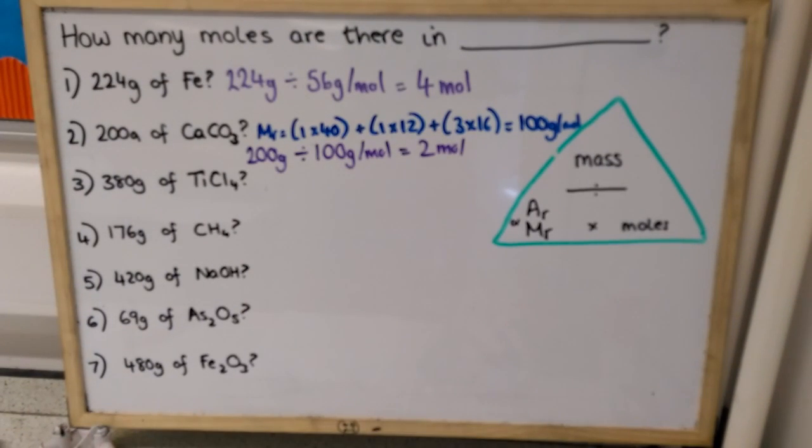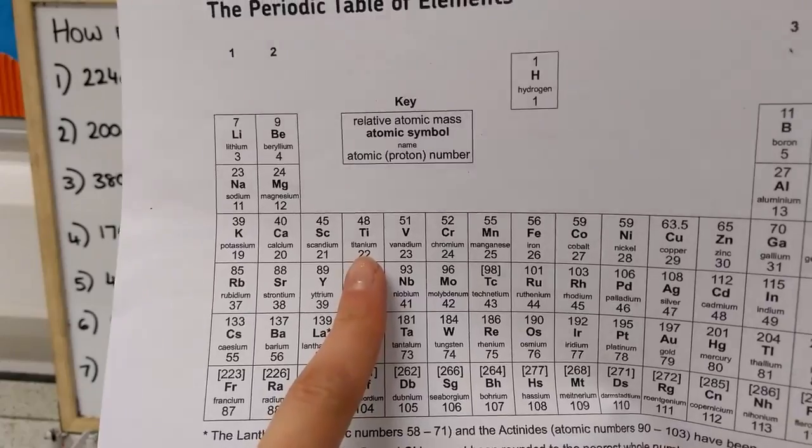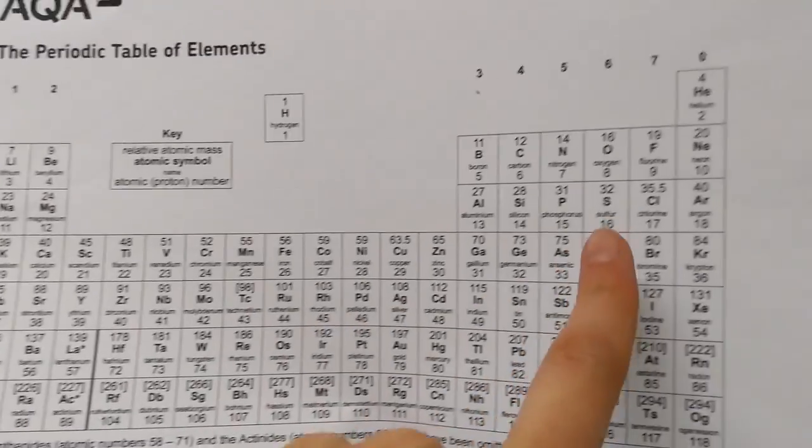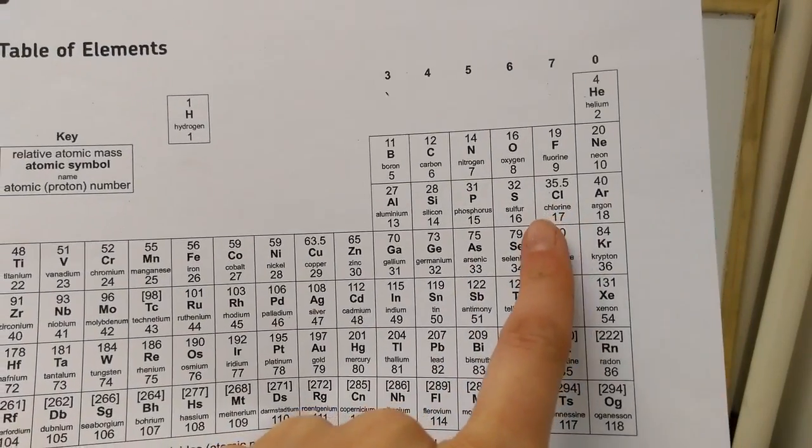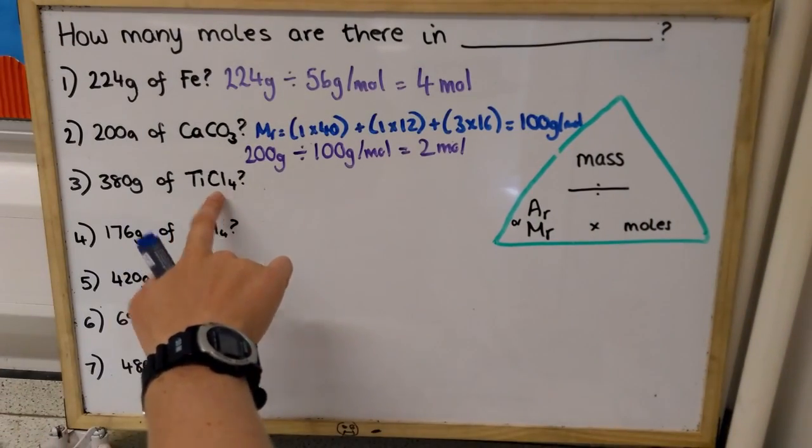We'll do one more example together, and then you can pause the video and have a go at the last four on your own. So, for titanium chloride, to work out the relative formula mass, we're going to need to know the relative atomic mass of titanium, which is 48, and of chlorine, which is 35.5. I can see I've got one atom of titanium, four atoms of chlorine.